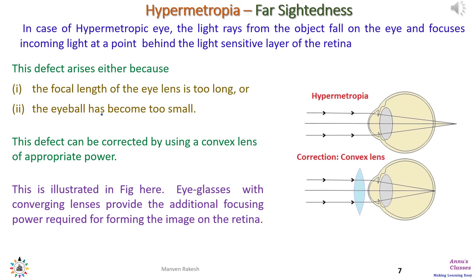In a hypermetropic eye, the image of the object is converged behind the retina, as shown in the figure. This defect arises for two reasons: either the focal length of the eye lens is too long, causing the image to form behind the retina, or the eyeball has become too small so it cannot capture the image. This defect can be corrected by using a convex lens of appropriate power.